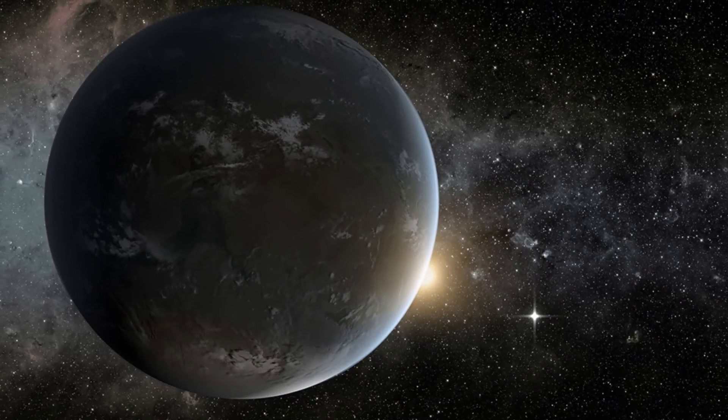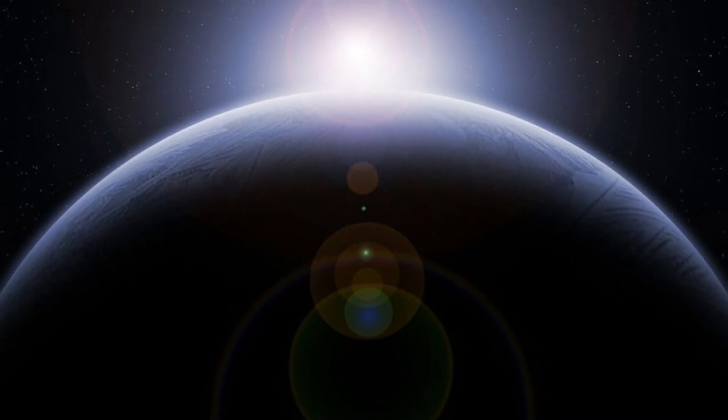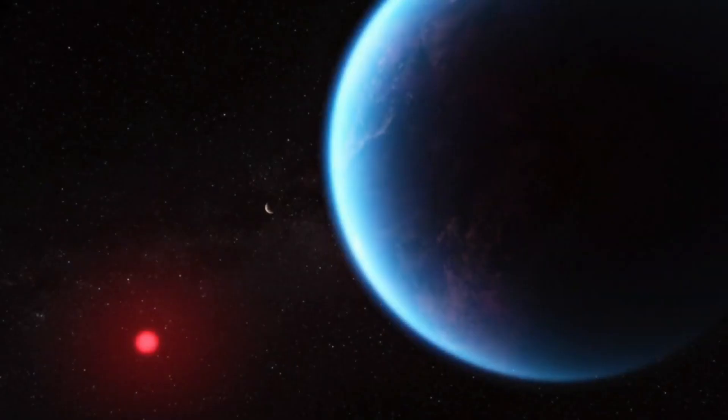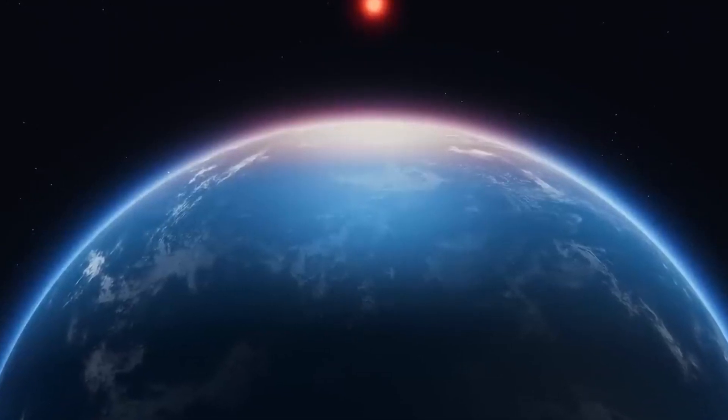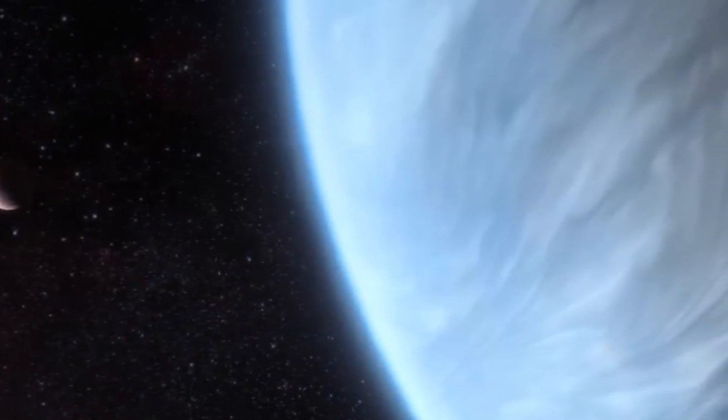The planet, located in a distant star system, is unlike anything we have ever seen before. It's a gas giant, similar in size to Jupiter, but it is surrounded by a thick layer of clouds that are made up of a strange, unknown substance.